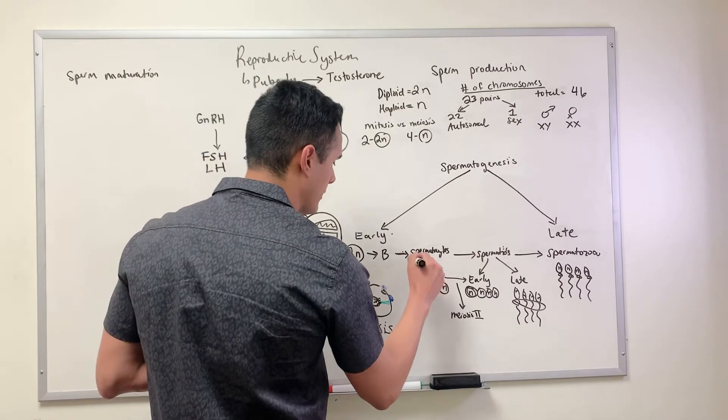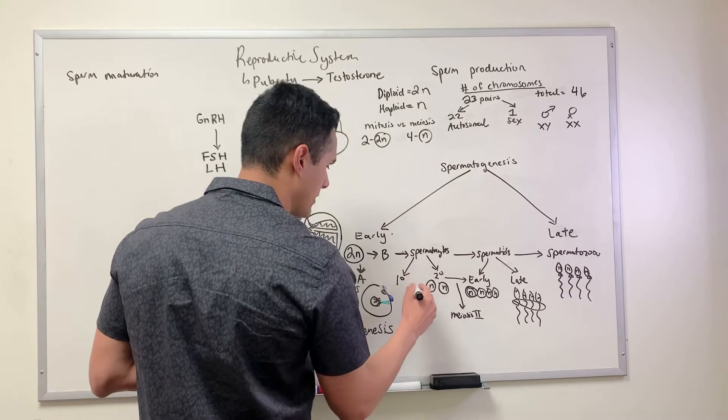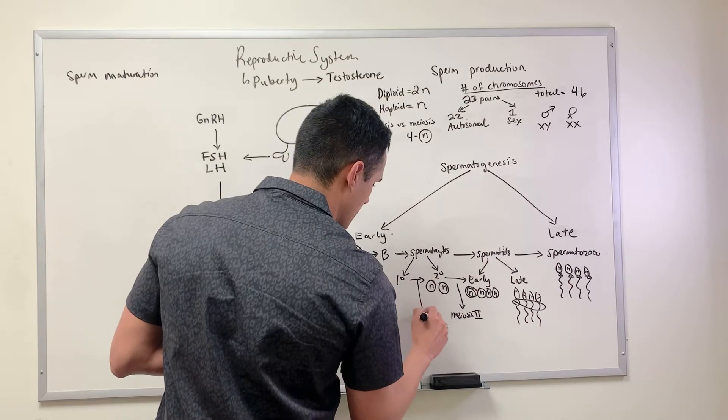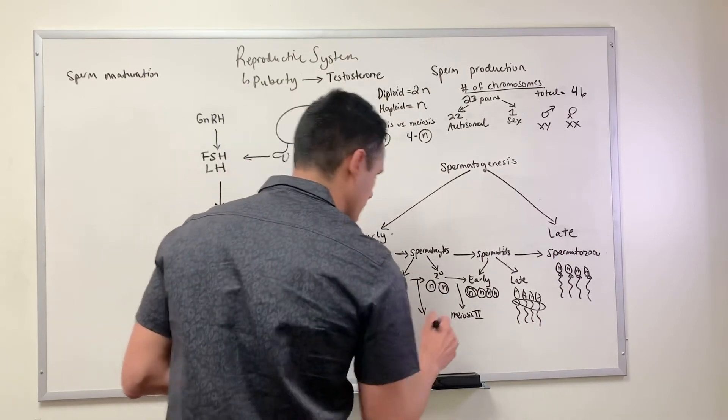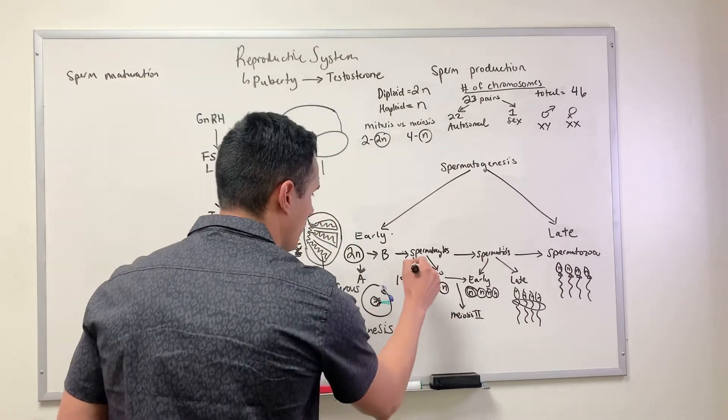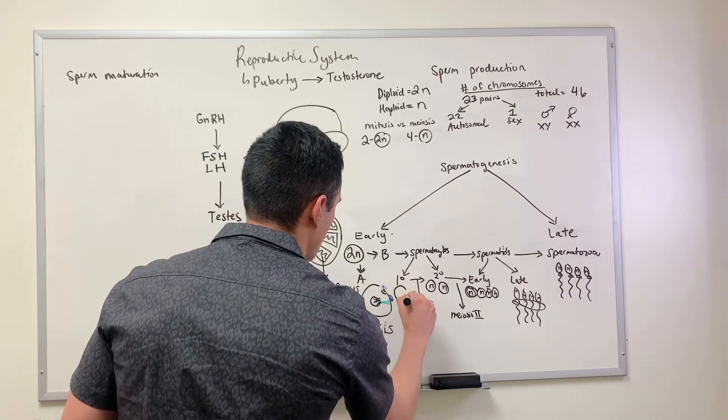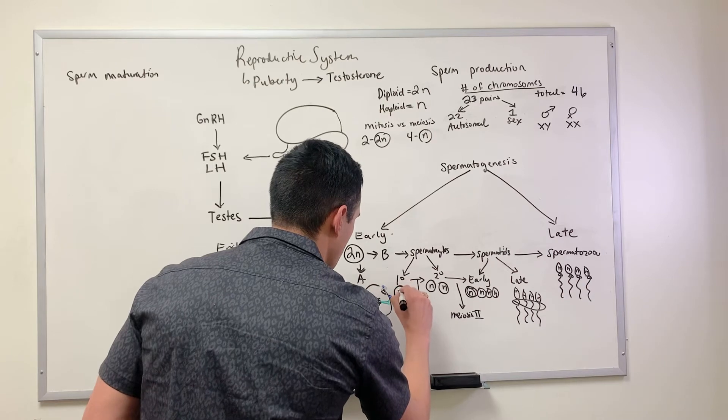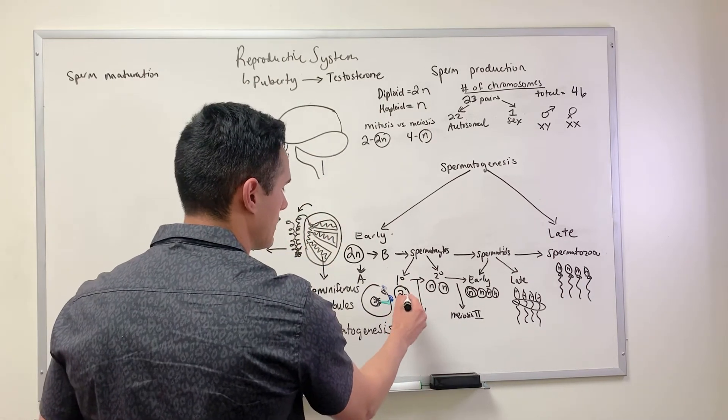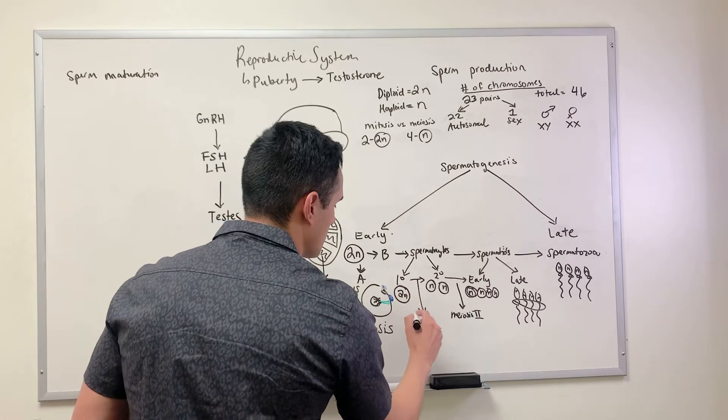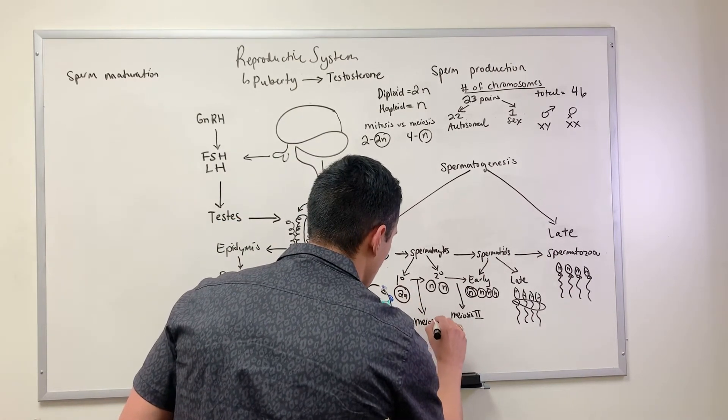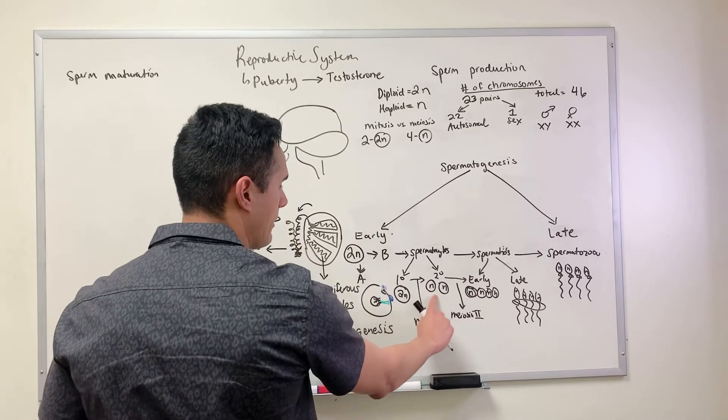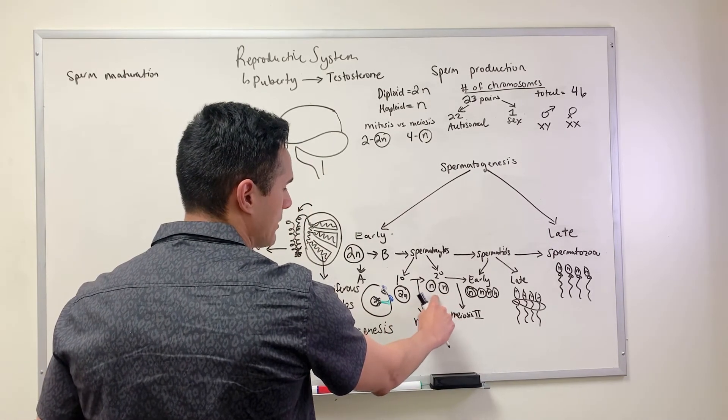Going from primary to secondary spermatocytes: from primary spermatocytes we have a single diploid cell. Once meiosis I is complete, we now have our two haploid cells.